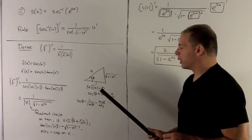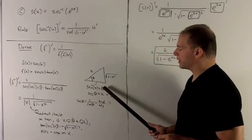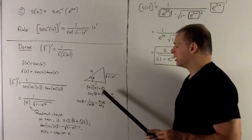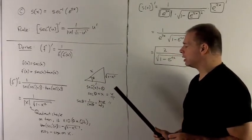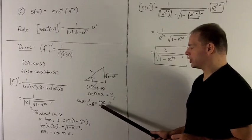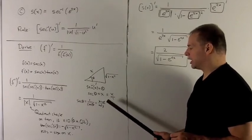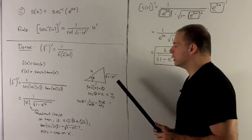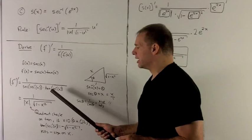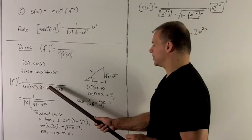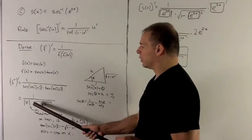We unravel secant inverse of x by calling it theta, then pushing the inverse secant to the other side to get secant theta equal to x, written as x over 1. Secant is hypotenuse over adjacent, so the hypotenuse goes with x and adjacent goes with 1, giving the other side as radical 1 minus x squared. So secant of secant inverse goes to x, and tan of secant inverse of x — tangent is opposite over adjacent — equals radical 1 minus x squared.